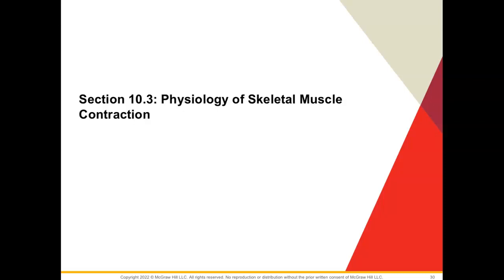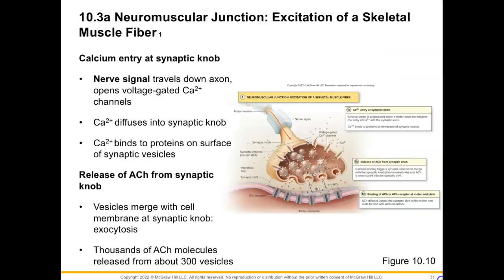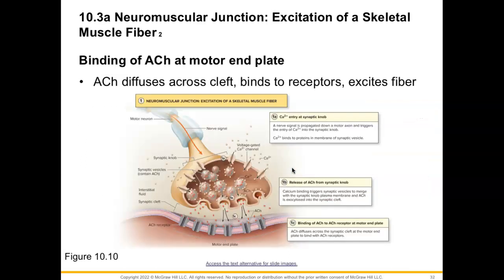Welcome again to your chapter 10 video lecture series, where we're going to talk about section 10.3 on physiology of skeletal muscle contraction. We talked about our neuromuscular junction, where calcium entered the synaptic knob and told our synaptic vesicles with acetylcholine to exocytose, allowing thousands of those acetylcholine molecules released from about 300 vesicles to diffuse through the synaptic cleft and bind to its receptors, exciting our muscle fiber.